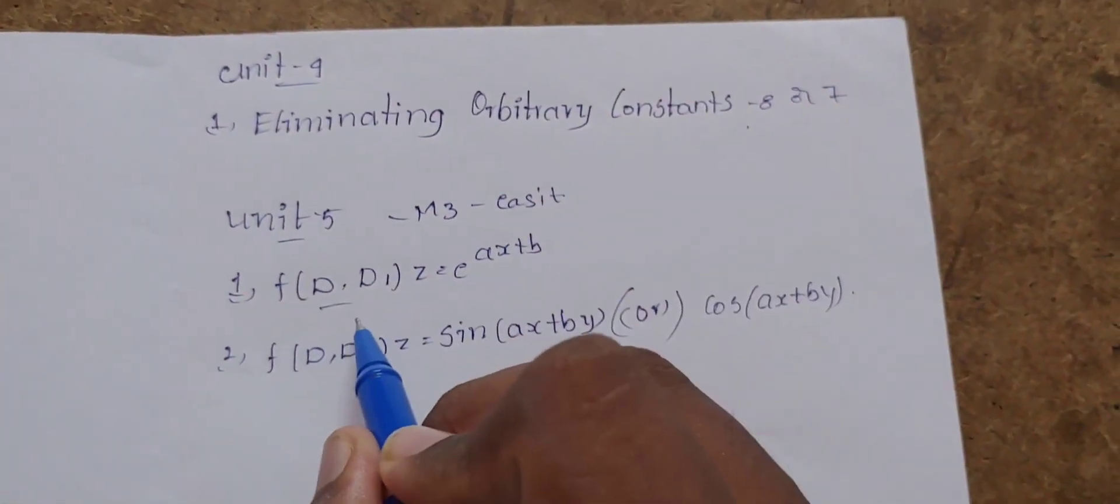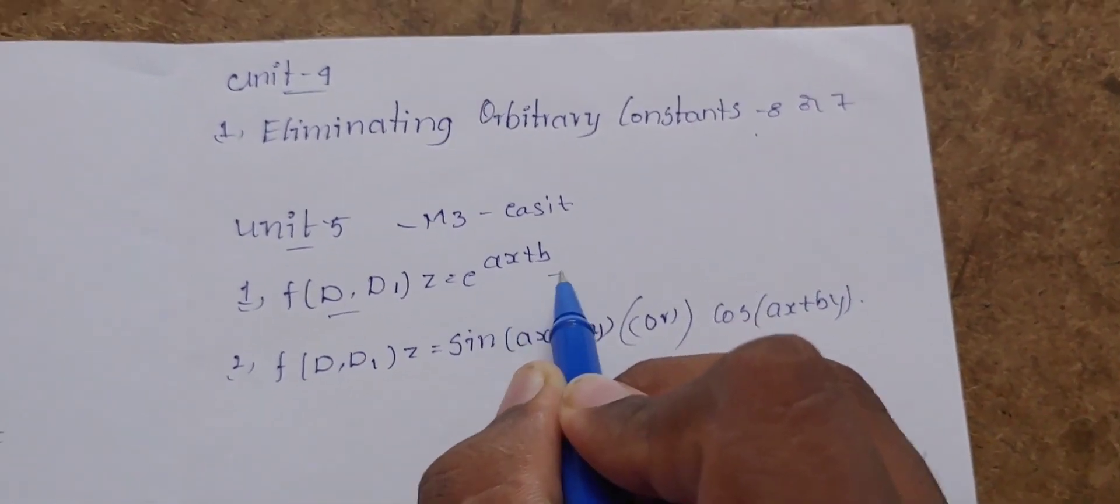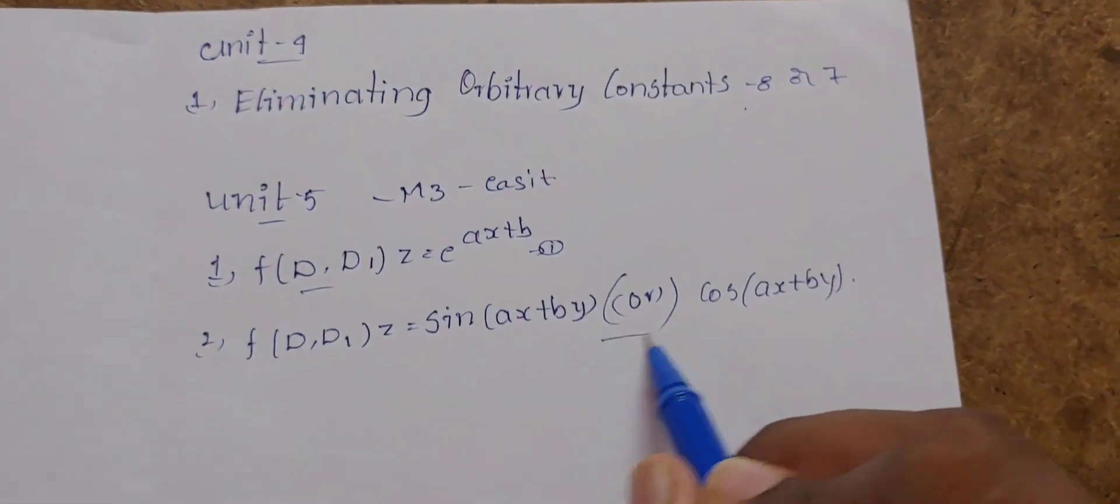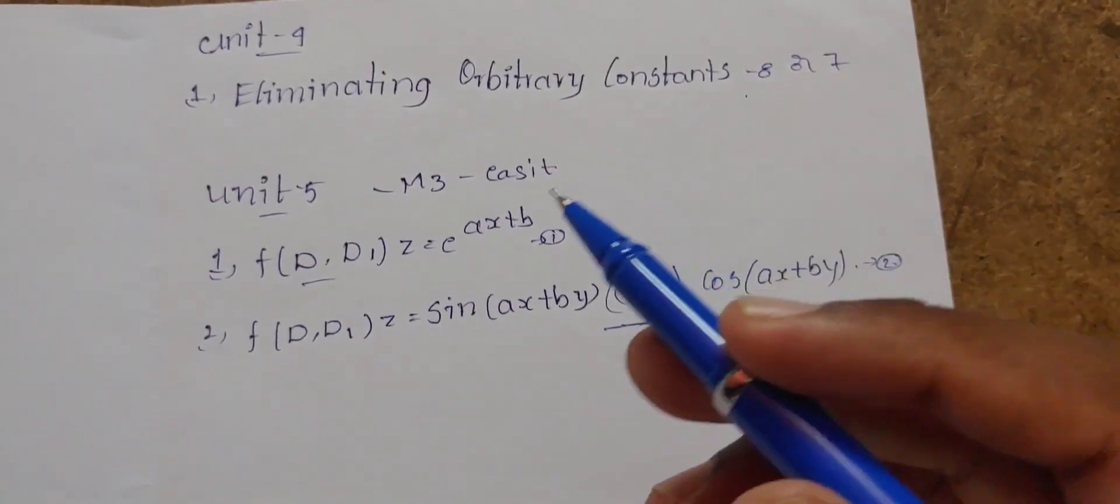Coming to unit 5, so this is the easiest chapter. So f of d comma d1 of z is equal to e power ax plus b. This is compulsory 8 or 7.